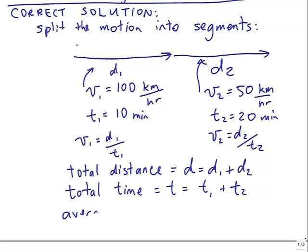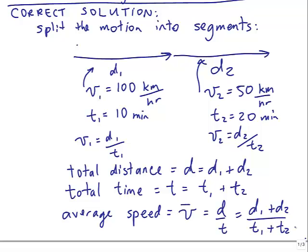It's going to be half an hour, 10 plus 20 minutes. And the average speed is the total distance divided by the total time, so D1 plus D2 over T1 plus T2.